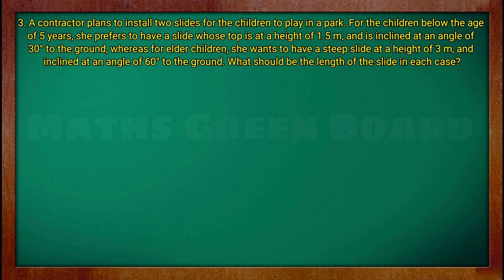Q3: A contractor plans to install two slides for children to play in a park. For children below the age of 5 years, she prefers a slide whose top is at a height of 1.5 meters and is inclined at an angle of 30 degrees to the ground. For elder children, she wants a steep slide at a height of 3 meters and inclined at an angle of 60 degrees to the ground. What should be the length of the slide in each case?